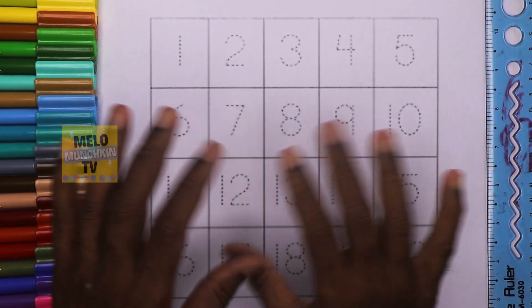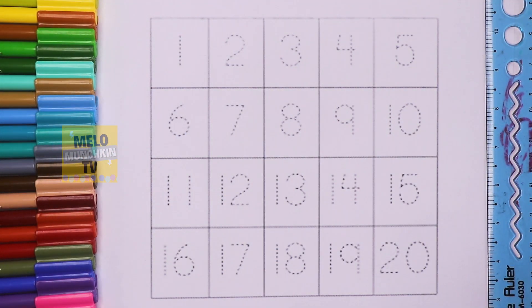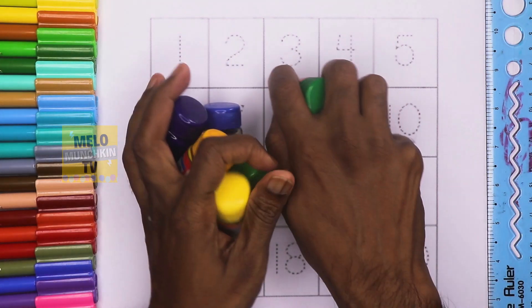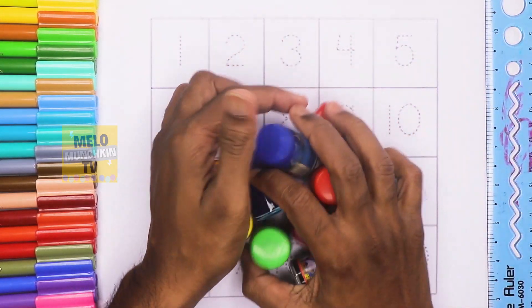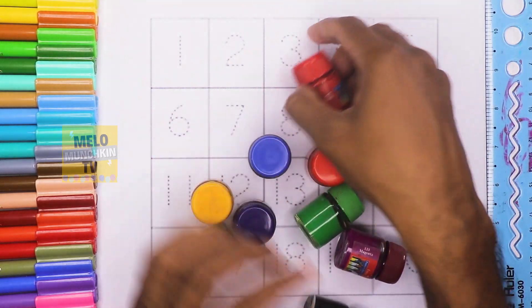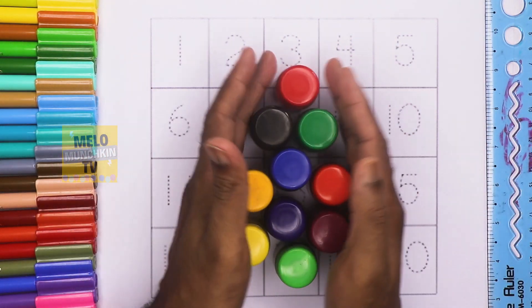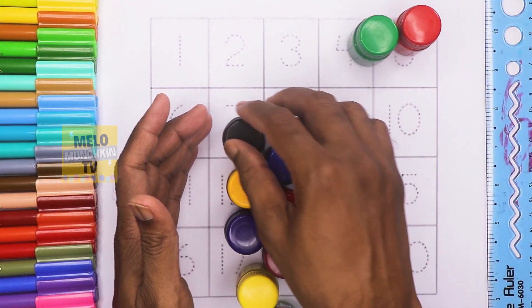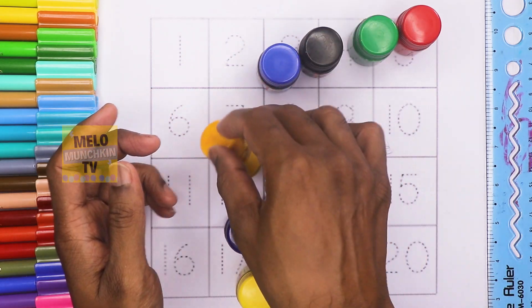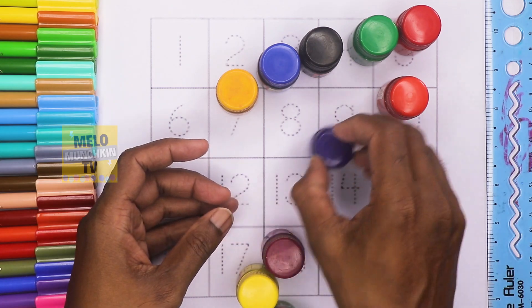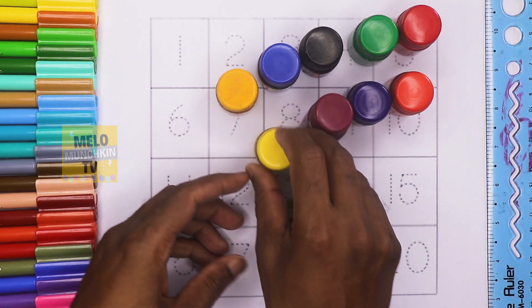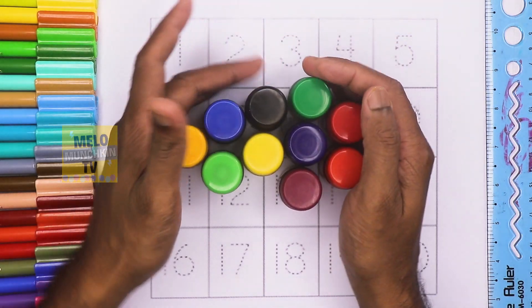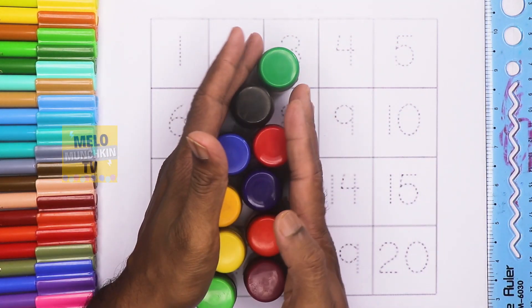Hello kids, today we'll learn numbers from 1 to 20, but before that we'll learn colors. So many colors! Let's count: one, two, three, four, five, six, seven, eight, nine, and ten. Ten colors.